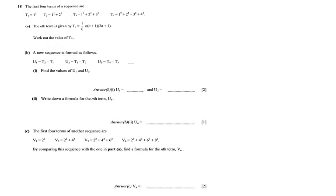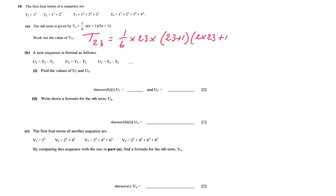They ask: work out the value of T23 — so what is the 23rd term? We evaluate the formula for n = 23, because Tn becomes T23. So T23 = (1/6) × 23 × (23+1) × (2×23+1). If you evaluate it properly and put it in your calculator, you're going to get 4,324. That's your answer.